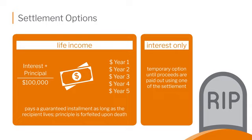Another settlement option is called life income. You as the beneficiary could tell the insurance company you'd like a little security and do something where you can't outlive this payment. That's why you'd want to do life income — they're going to continue to pay you for as long as you live. Even if you go through all of the death benefit and accrued interest, it's always there. But if you die before they pay it all out, the insurance company keeps the remainder.